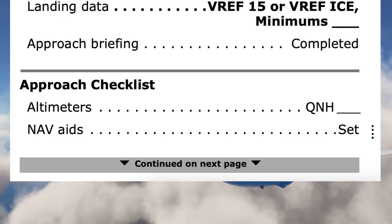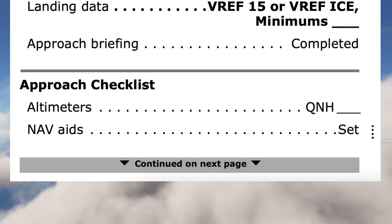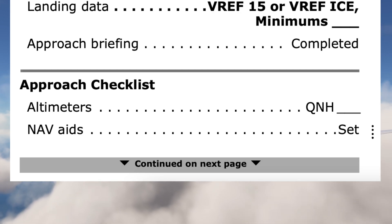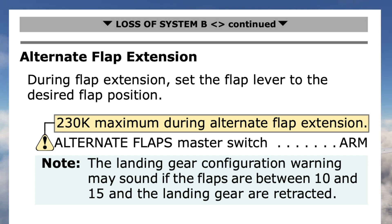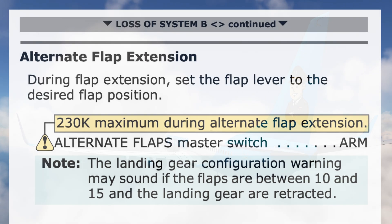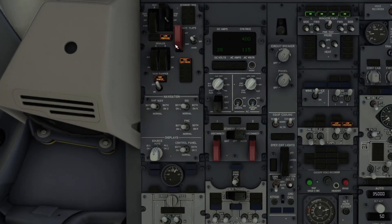Approach checklist. Altimeters 3002. Nav aids: set. Alternate flap extension — during flap extension, set the flap lever to the desired flap position. Caution: 230 knots maximum during alternate flap extension. Alternate flaps master switch: arm. It's set to arm.